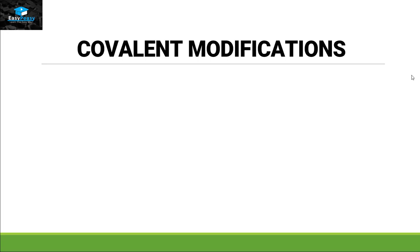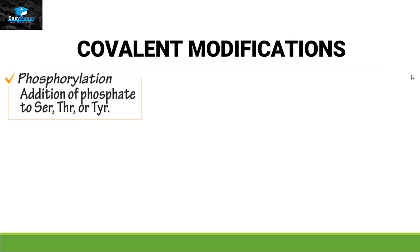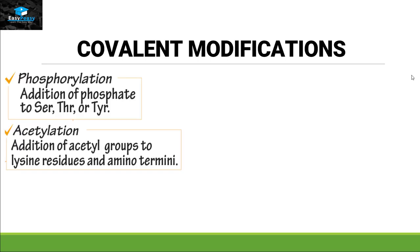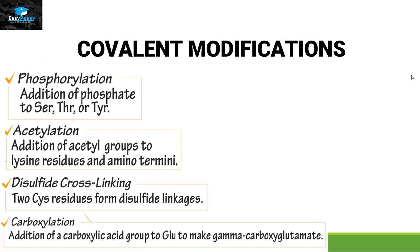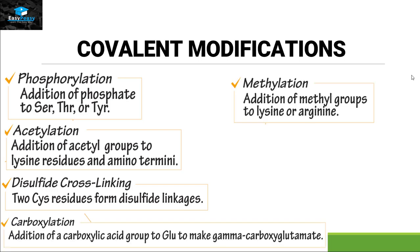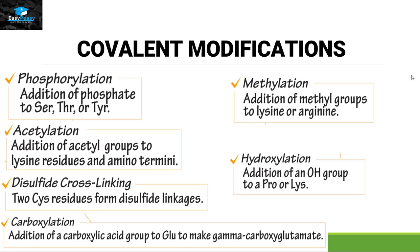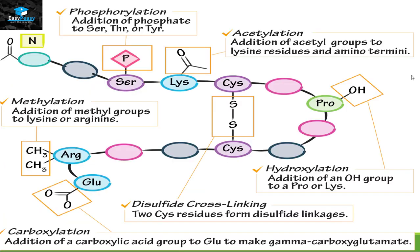Next are covalent modifications. Proteins undergo covalent modifications, which can include phosphorylation, acetylation, disulfide cross-linking, carboxylation, methylation, and hydroxylation. Let's take a polypeptide chain and see how these covalent modifications occur on it.